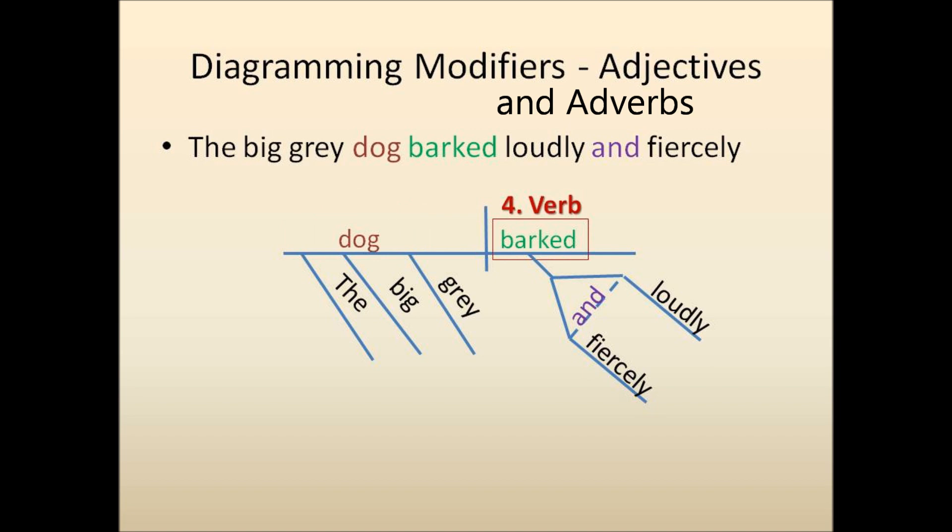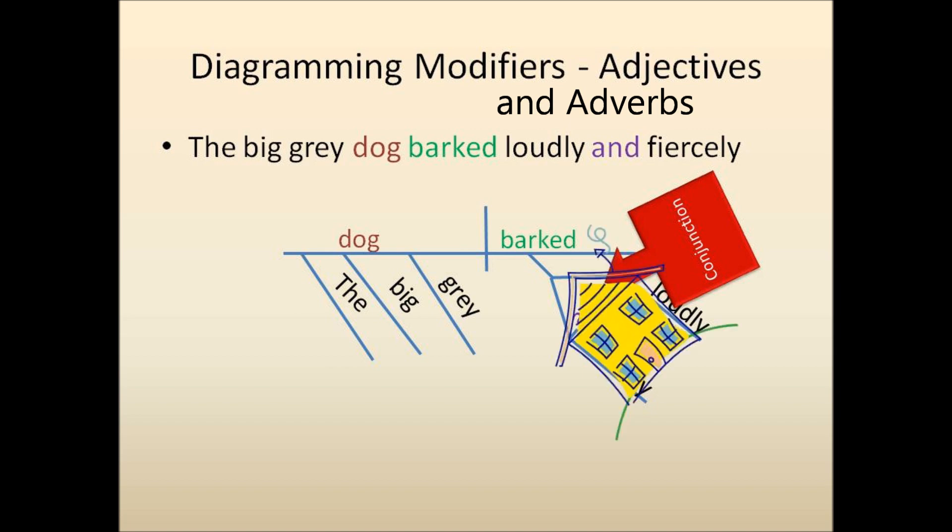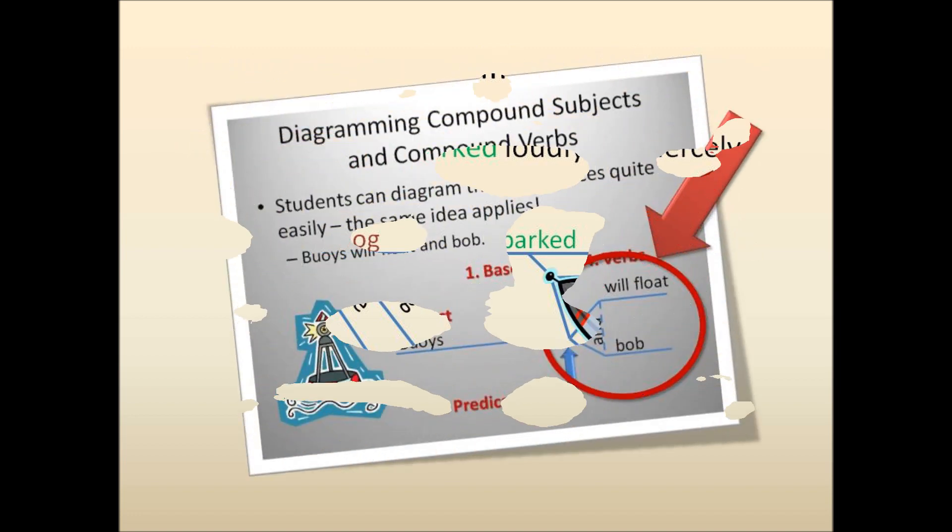And notice that you have a conjunction in the sentence, which means you have a compound adverb. Some students like to think of this compound construction like a house or like a rocket ship. We've seen it before.